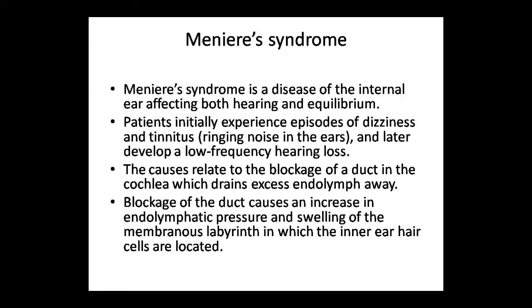Hearing loss can be treated with hearing aids and cochlear implants, which we will study in the next class. Today we are not in the last class — it is the second-to-last class. Today we covered four diseases: deafness, which can be temporary or permanent, partial or complete, classified into conductive deafness and sensory neural deafness; neural presbycusis, which is partial hearing loss due to aging or loud sound exposure; and vertigo, which is dizziness or chakkar caused by equilibrium dysfunction.